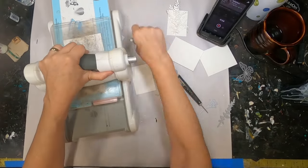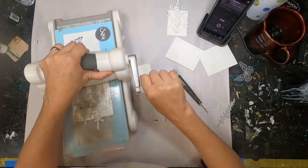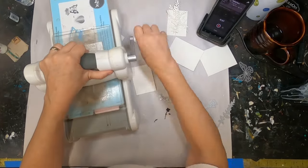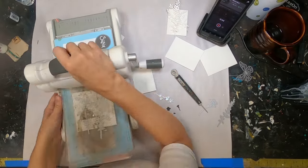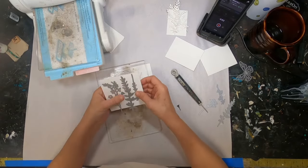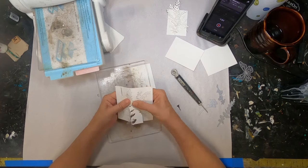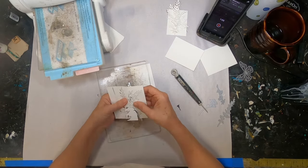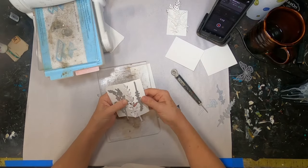So the first thing I'm going to do is run these flora and fauna dies through my Sizzix Big Shot and create some depth utilizing just plain white cardstock. Now if you don't have a Sizzix and you don't have the dies all you have to do is hand illustrate, hand draw something on a piece of white cardstock and cut it out.